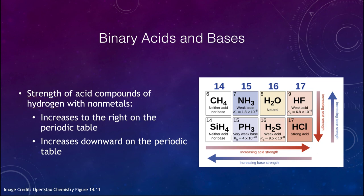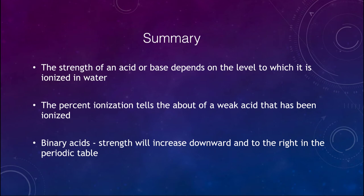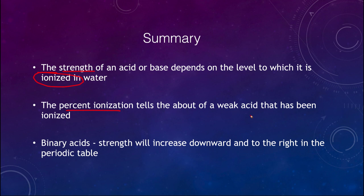To summarize: we talked about the strength of an acid or base, which depends on the level to which it is ionized in water. A strong acid is ionized at 100%, while a weak acid can be much less — we saw about 6% ionization in our example. The percent ionization tells you how much of the weak acid has been ionized. We also looked at binary acids, where strength increases downward and to the right in the periodic table.